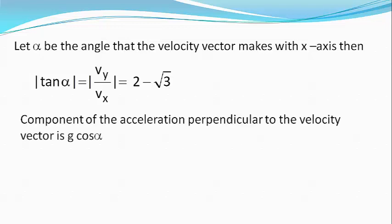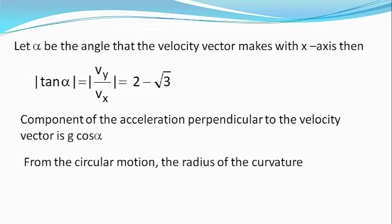The component of the acceleration perpendicular to the velocity vector is g cos alpha. From the concepts of circular motion we know that the radius of curvature r equals v square divided by g cos alpha.